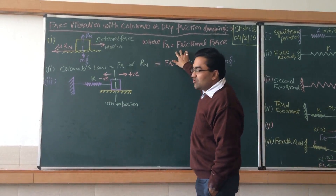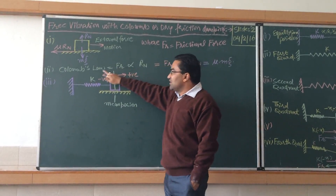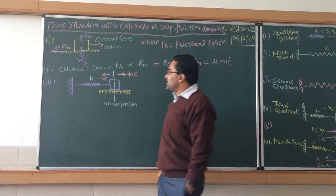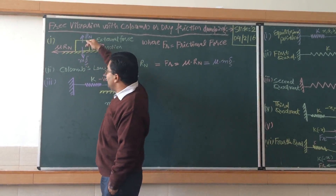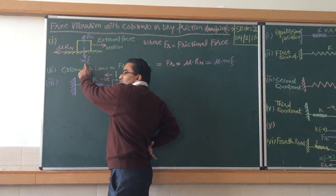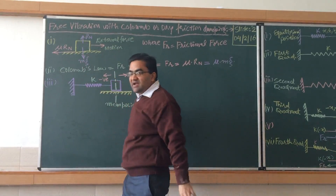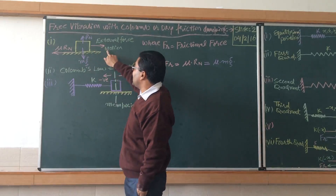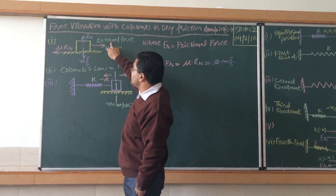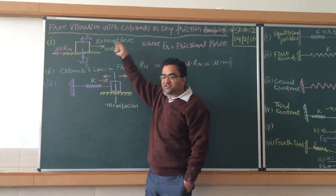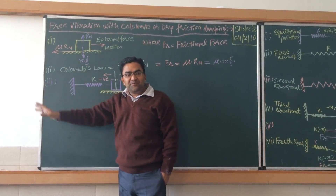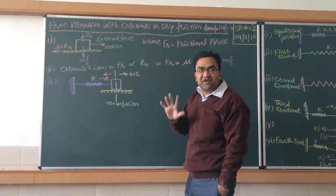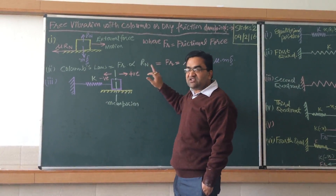Coulomb's law states that the frictional force of dry friction damping is directly proportional to the normal reaction. An object lying on a surface has its weight acting downward, and the normal reaction acts vertically upward. The frictional force acts in the opposite direction to the motion. When you apply an external force to the right, the frictional force will be in the opposite direction.